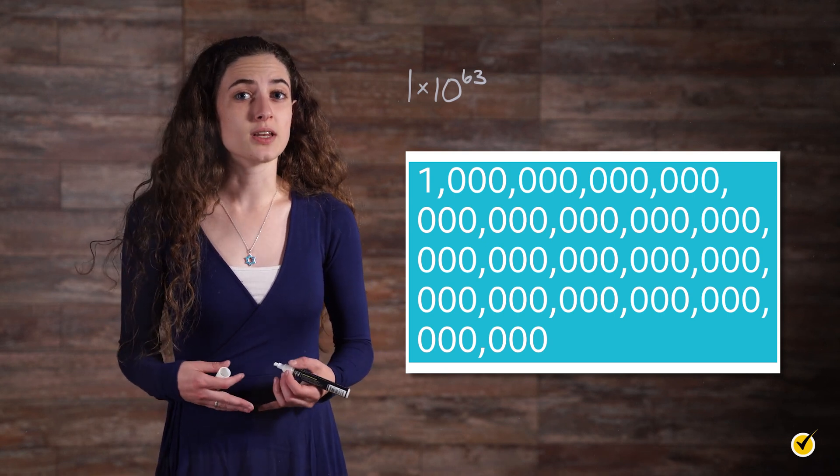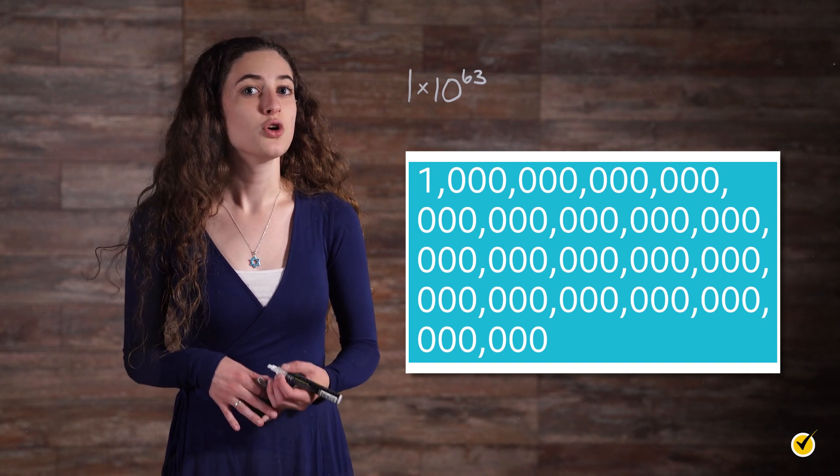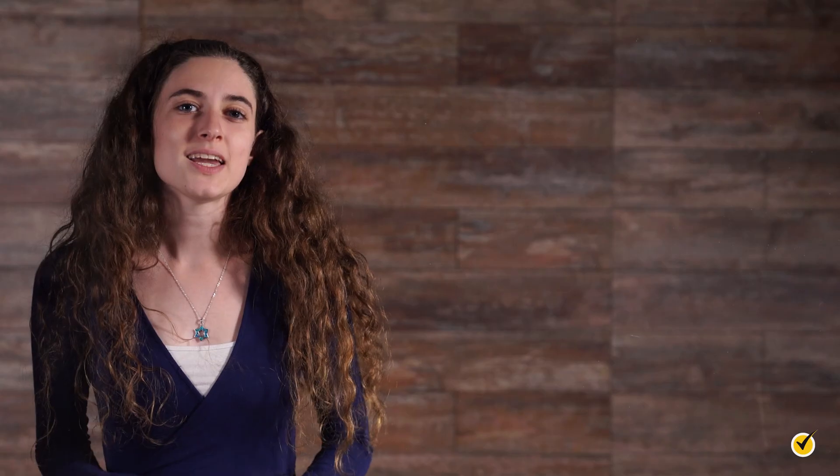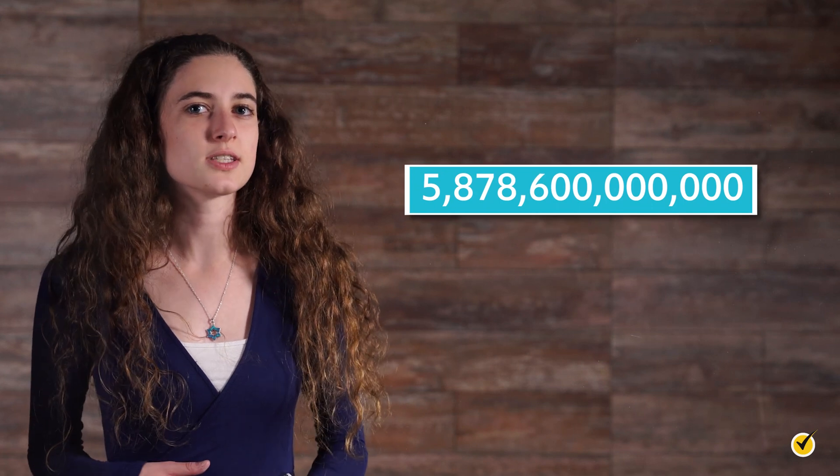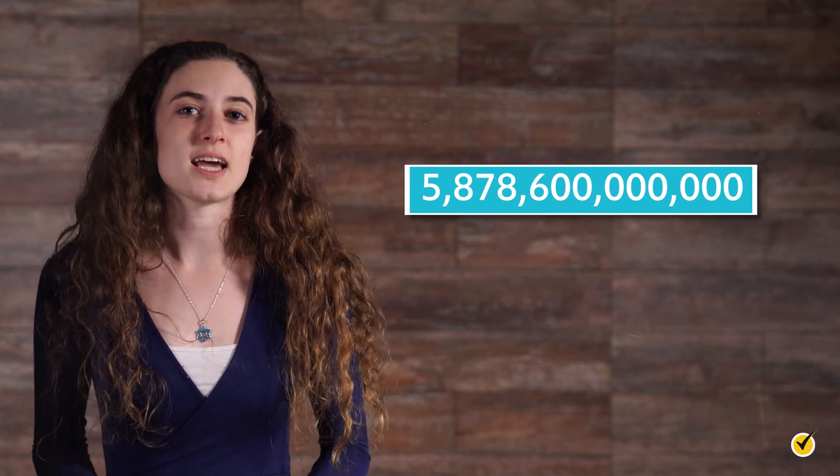In the fully written number, it's important to realize that each time we multiply by 10, we move to a new place value. So adding a zero means multiplying by 10. A light year, the distance light travels in a year, is 5,878,600,000,000 miles. Let's express this in scientific notation.